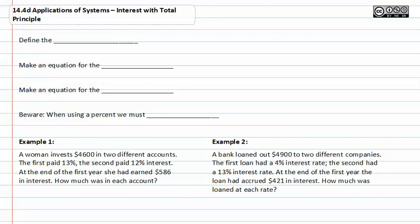When working with applications of systems and realizing that there will be interest problems with a total principle given, we need to first define the variables. Then we need to make an equation for the investment.